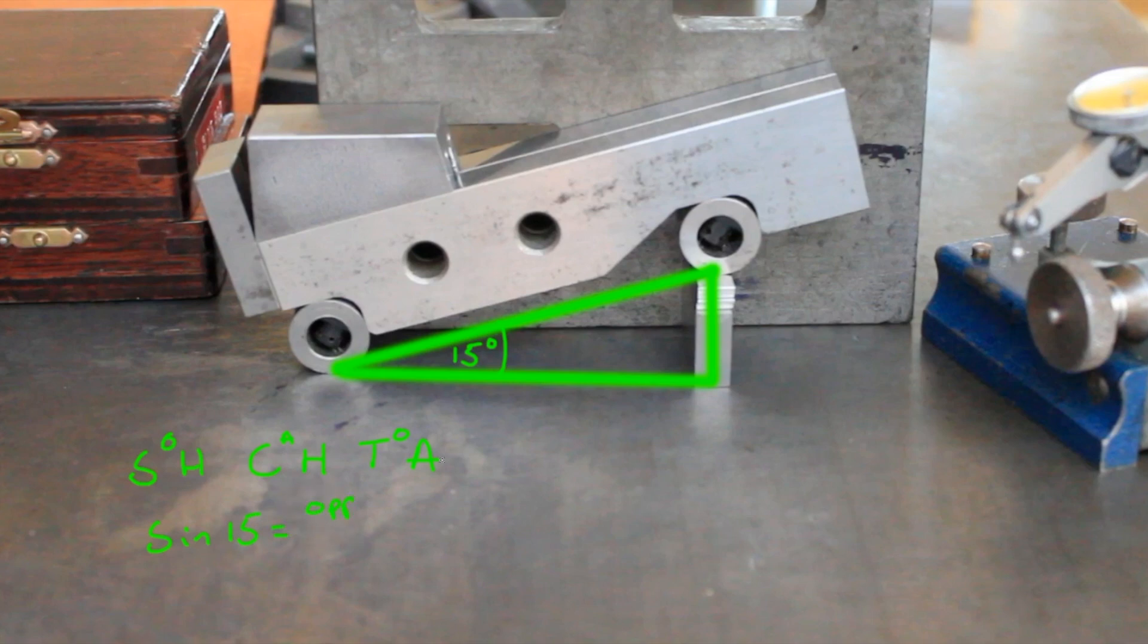...which is our slip gauge pile here that we don't know—we're trying to find that out—over the hypotenuse, which is this known distance. It's a 100 mil sine bar, so that is 100 millimeters. And we can rearrange that to get sine 15 times 100 equals the slip gauge height that we need, so we'll need to put that into a calculator.